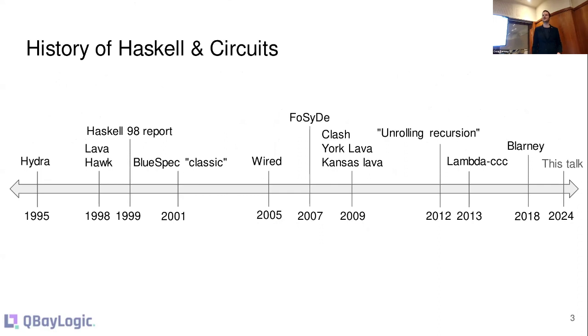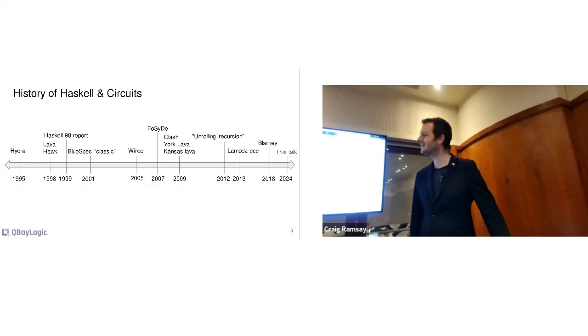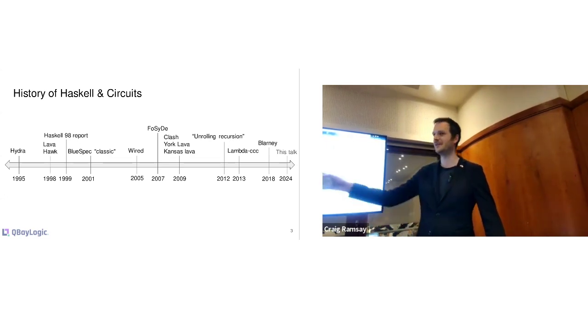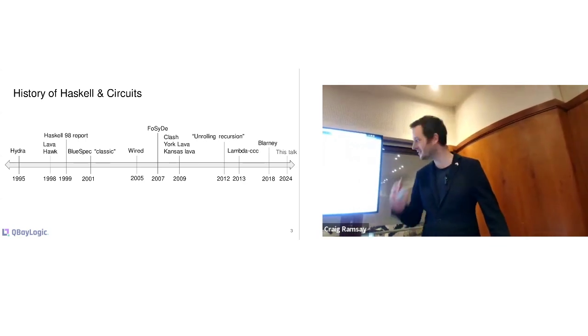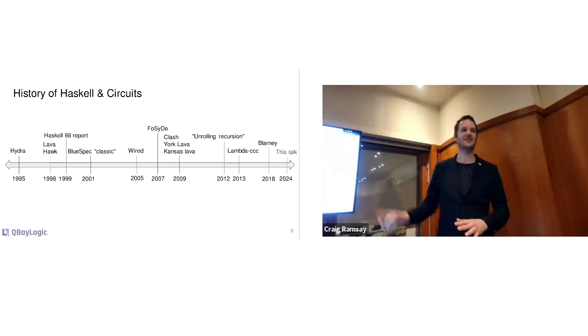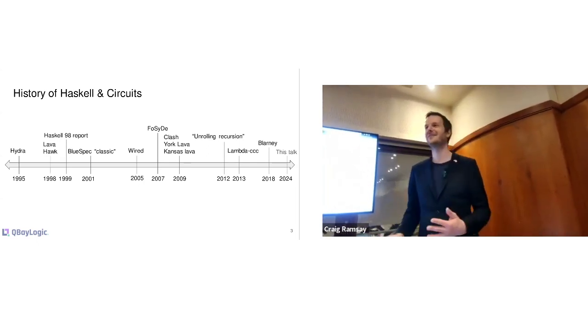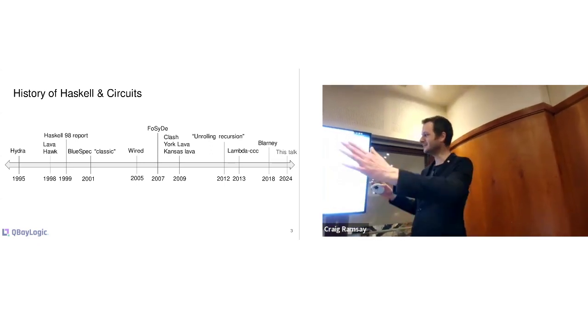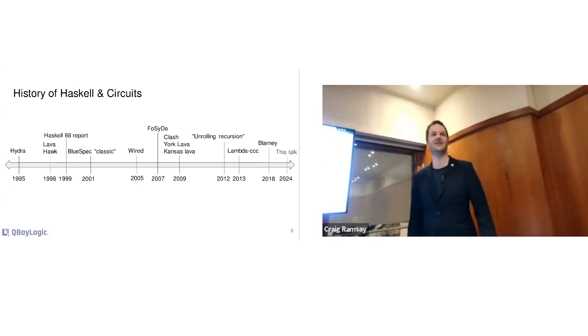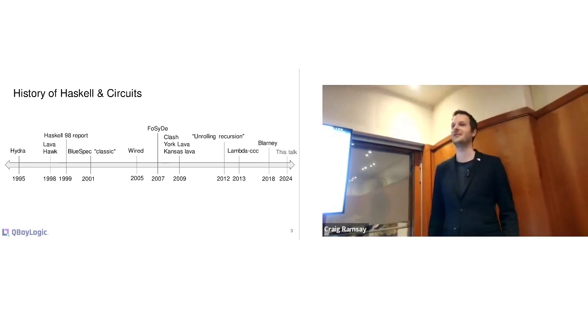For some time now I've been working on a compiler called Clash that takes Haskell code and uses actually most of the GHC Haskell compiler as a front end and compiles that to VHDL Verilog, System Verilog. And I want to share some of my experiences during that and what's worked, what doesn't work. But actually, if you look at Haskell, there's been quite a long history of doing Haskell and circuit design.